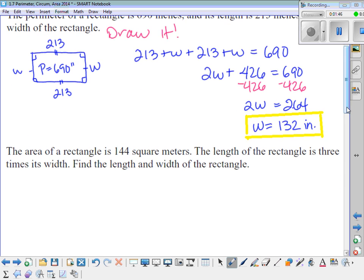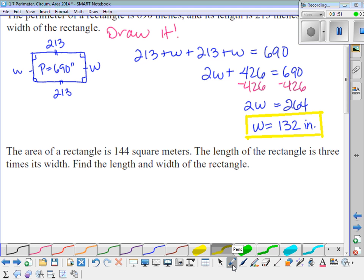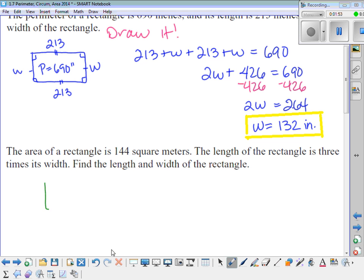This next problem involves area. Now we have a rectangle with an area of 144 square meters, so I'm still going to draw myself a picture of it. The area equals 144 square meters. And the length is 3 times the width. So if I call the width W, 3 times the width is going to be 3W.